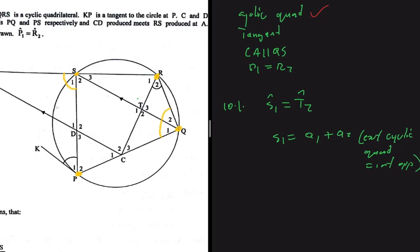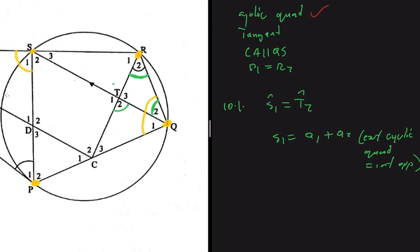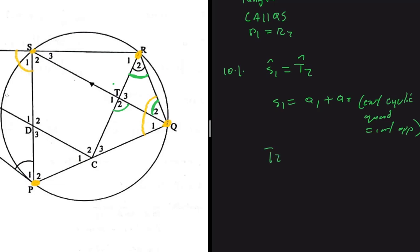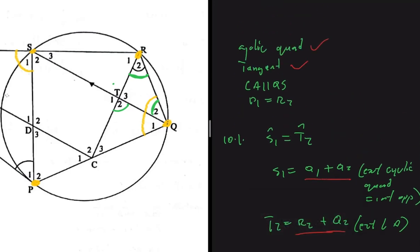We're supposed to prove that S1 equals T2, but S1 has no immediate connection with T2. When I look at T2, I realize quickly that T2 equals R2 plus Q2 — an exterior angle of a triangle equals the sum of the two interior opposite angles. So T2 equals R2 plus Q2. Now we have S1 = Q1+Q2 and T2 = R2+Q2. Let's go to our next keyword: the tangent.